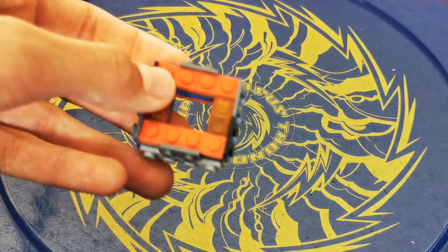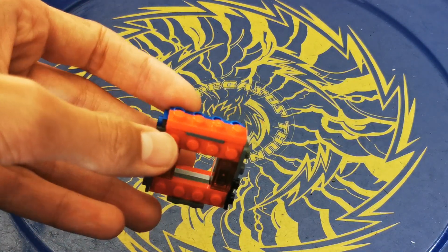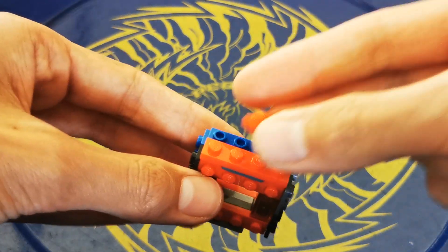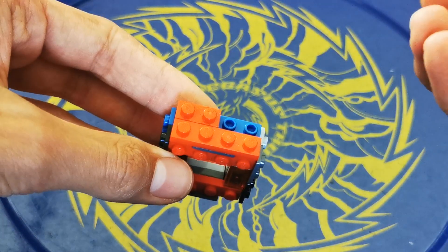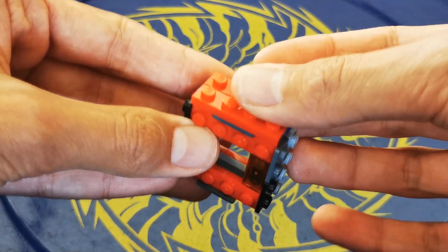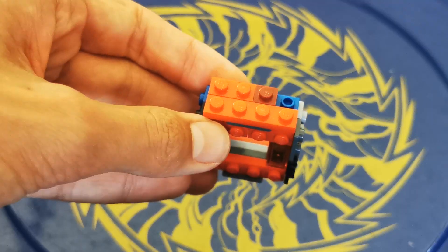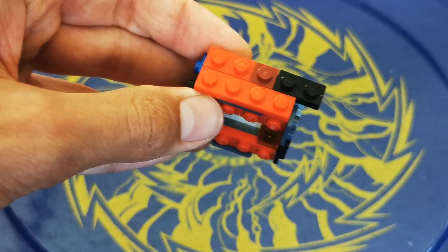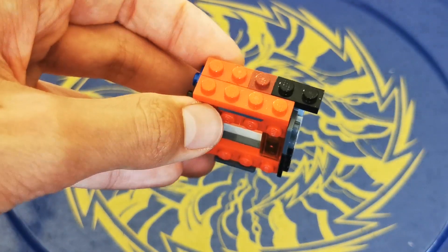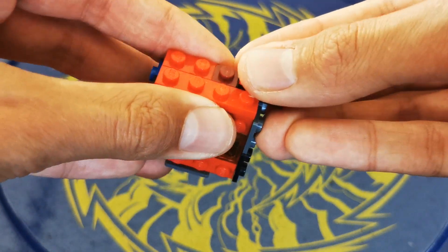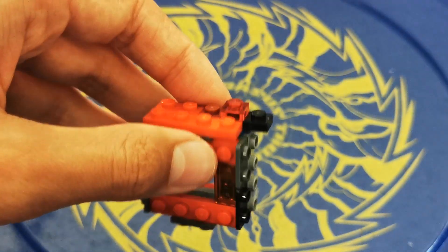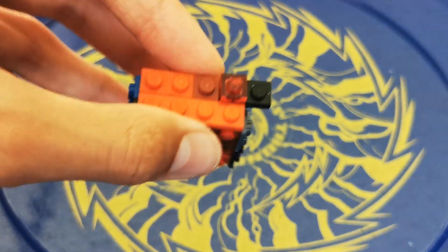Now for the sides. Grab a 1x4 tile in red and put it there. Next grab a 1x2 tile in red and a 1x1 square stud in dark red and put it there. Then grab a 1x2 black tile and put it there, and a 1x1 square see-through red stud there.